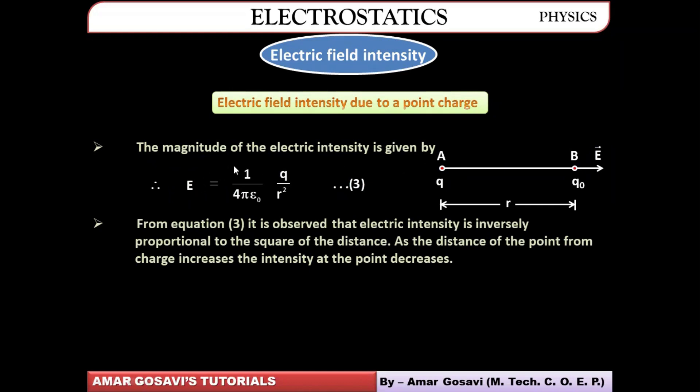Electric intensity depends on the magnitude of charge — if the magnitude of charge is more, electric intensity is high, meaning electric field strength at that point is high, and vice versa. Electric intensity also depends on the distance from the charge — if the distance increases, electric intensity decreases, and vice versa.